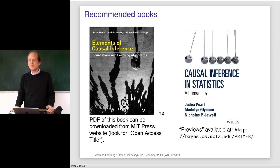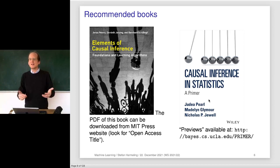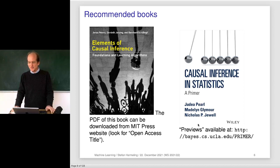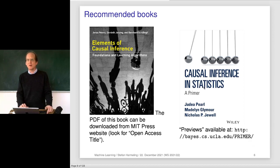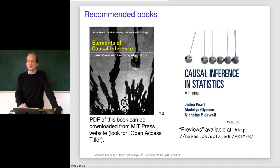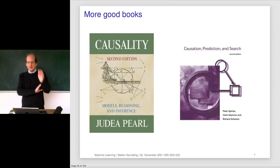The Judea Pearl book is written for people from social sciences or economics — just the right level to understand causality. The Pearl view on things is really nicely and easily explained. For this book there are so-called previews available where you can read parts of the book online. I like both books a lot — they are written from slightly different perspectives, but if you read both you know more than I do.